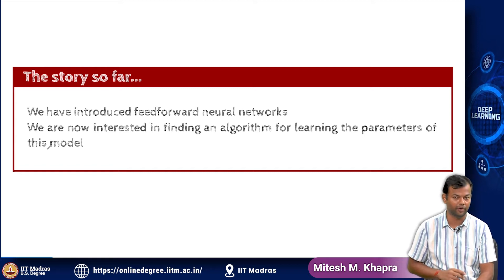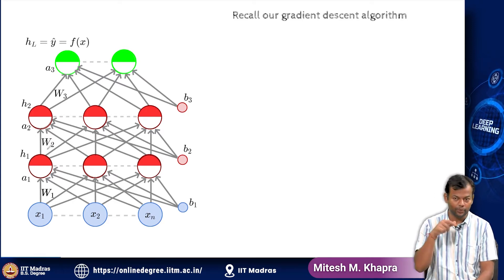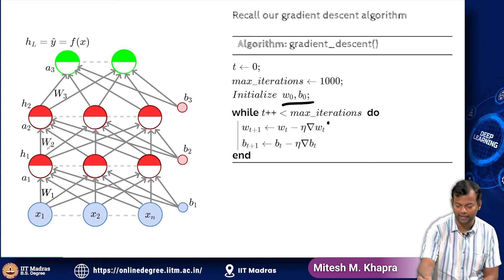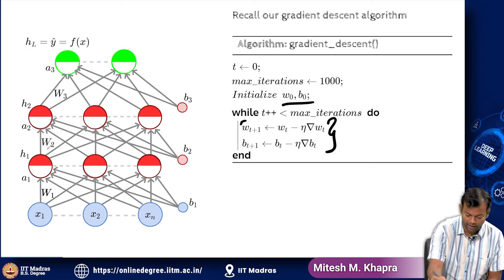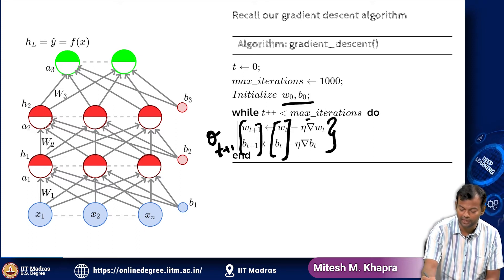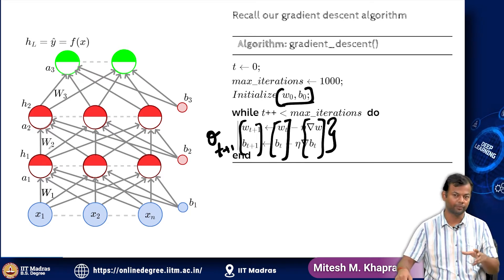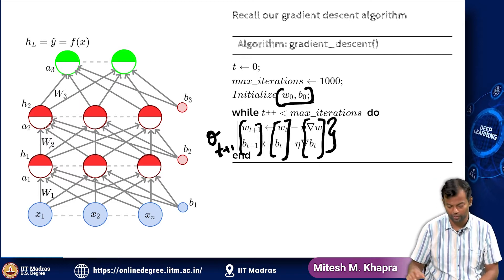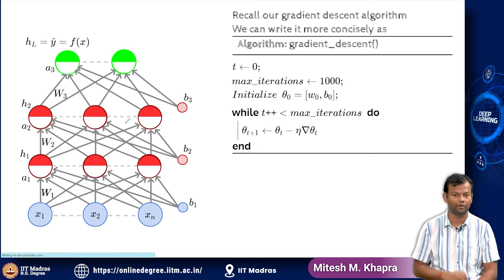So the story so far is that we have introduced feedforward neural networks and we are now interested in finding an algorithm for learning the parameters. Let us quickly recall our gradient descent algorithm. We had initialized the weights and at every step we were updating the weights. I can write this more compactly: theta t+1, theta t, and the gradient vector, replacing the collection of W and B by theta — that is the only change.